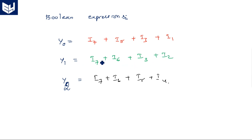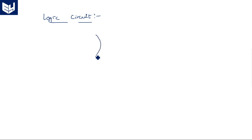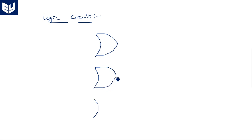When any of these four is 1, Y2 is 1 — meaning it is an OR operation. So we need OR gates: three OR gates with four inputs each. Three OR gates with four inputs each form the logic circuit.